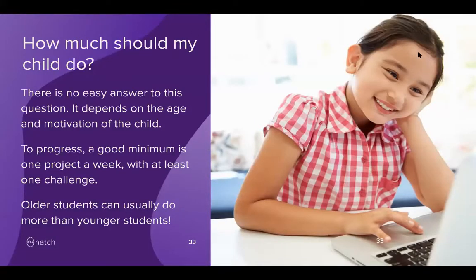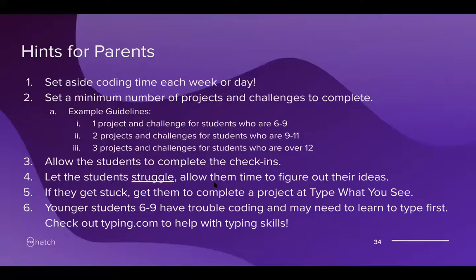How much should your child do? It really depends on the age and motivation of the child. To progress, a good minimum is one project a week with at least one challenge. During the summer, I always recommend doing a project a day. Projects can range from about five minutes to an hour depending on the student's level and ability to code, and whether they're doing it at type what you see or English description. If there's less time, a project a week with a challenge will still ensure progress.